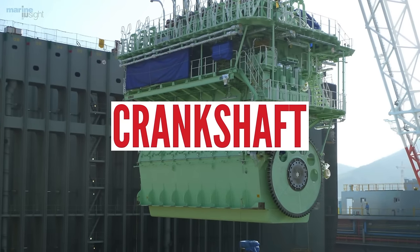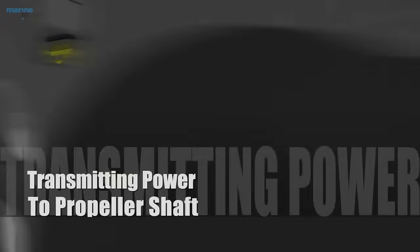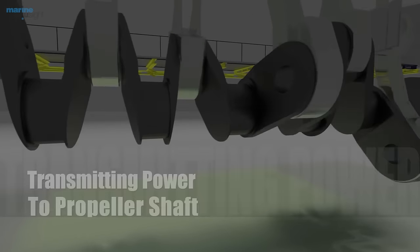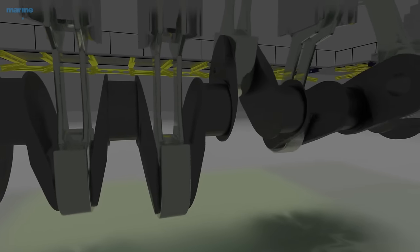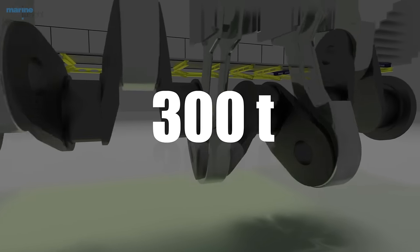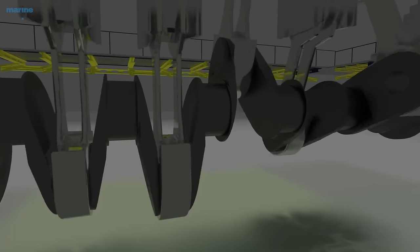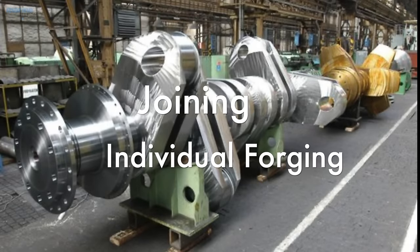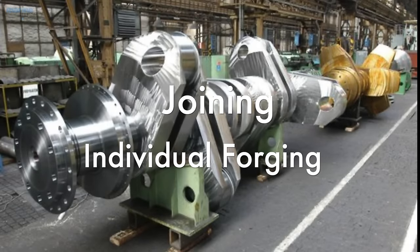Crankshaft: It is the main component behind transmitting power to the propeller shaft. The crankshafts on large modern two-stroke marine diesel engines can weigh over 300 tons. They are too big to make as a single unit and so are constructed by joining together individual forgings.